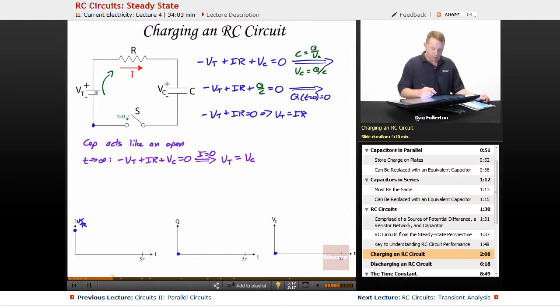So our current went down to zero. It's going to follow a path something like this, an exponential decay up to this point that we're going to call five tau or five time constants. And we'll talk about exactly what that time is here in a moment.